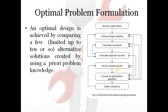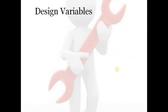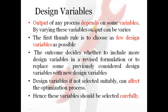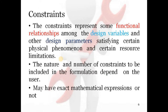This is the general flowchart of an optimization problem. Regarding design variables: the output of any process depends on certain variables, and by varying these variables the output can be changed. The first rule is to select the minimum number of design variables. If these variables are not selected carefully, the overall optimization problem will be affected by wrong selection, so they must be chosen very carefully.